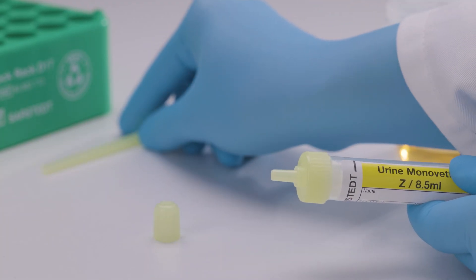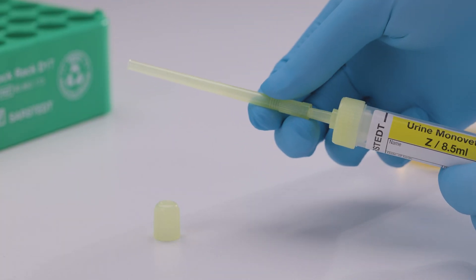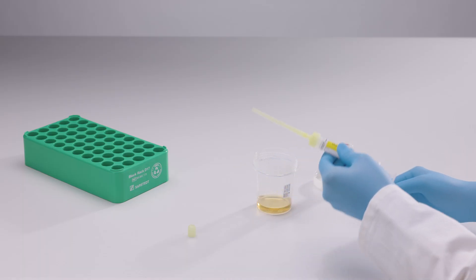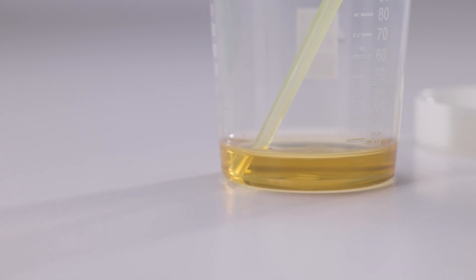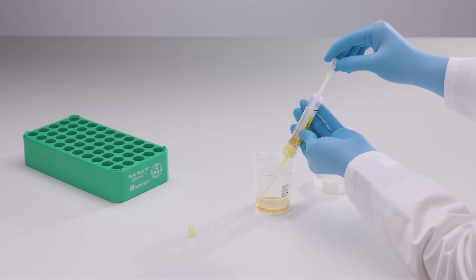Attach the collection tip to the Urine MonoVet. Insert the tip of the collection tip into the urine sample. Slowly pull the piston back until it reaches the line at the bottom of the label.